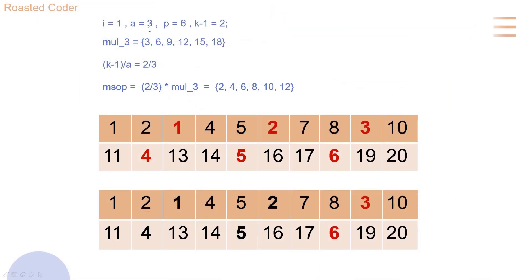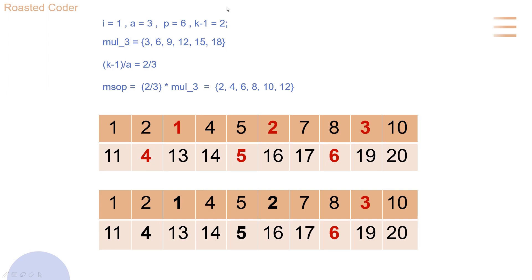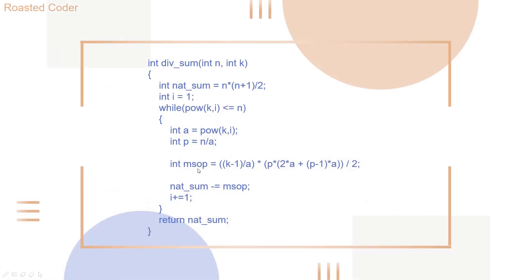For i equals 1, a equals k to the power i, so a equals 3. p equals n divided by a — p is just the number of multiples of a that are less than or equal to n. So if a equals 3, then p equals 6. k minus 1 is constant in this example, which is 2 since k equals 3. The multiples of the first power of 3 are 3, 6, 9, 12, 15, 18. We calculate k minus 1 divided by a for the modified sum of powers.